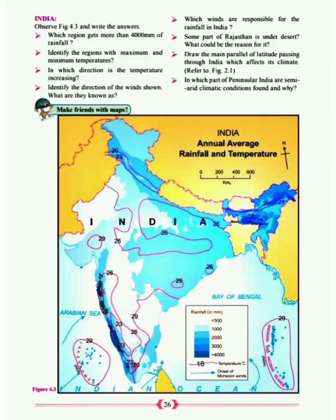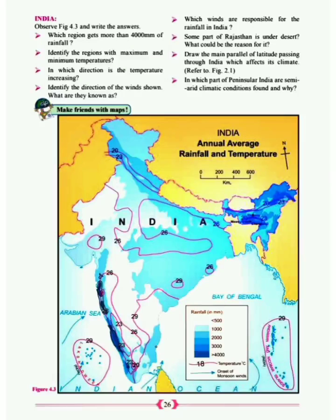So the south eastern part near the Bay of Bengal has 29 degrees. Another 29 is found near Gujarat and Maharashtra, which is the western part. So maximum temperature of 29 is in the south eastern part near Bay of Bengal and also the Gujarat side, which is western. For minimum, if you look carefully, the value 20 is found in the south of India, so the minimum is in the south.